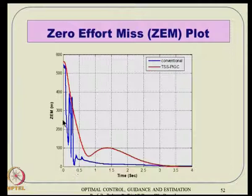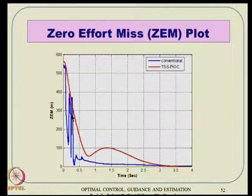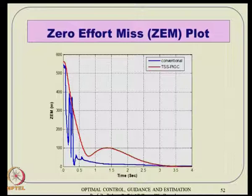Regarding zero-effort miss behavior: in the conventional loop, there is heavy chattering in fin deflections initially, which demands significant battery power and affects actuator life. In the partial IEGC design (red line) the fin deflection profiles are smooth and small throughout, compared to the large chattering in the conventional (blue line) approach.